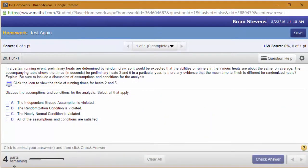In a certain running event, preliminary heats are determined by random draw, so it would be expected that the abilities of runners in the various heats are about the same on average. The accompanying table shows the times in seconds for preliminary heats 2 and 5 in a particular year. Is there any evidence that the mean time to finish is different for randomized heats? Explain. Be sure to include a discussion of assumptions and conditions for the analysis.